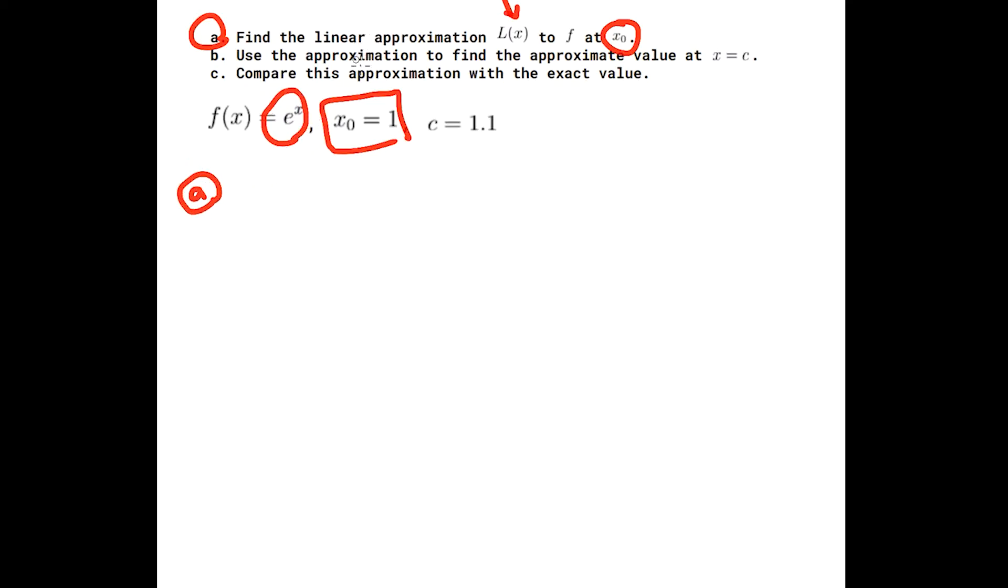To do this we need to figure out the equation of a tangent line at 1. So to do that I need to find the derivative first. Luckily the derivative of e^x is itself, so that makes it kind of easy. And we need to figure out that slope at 1, so I'm going to plug 1 in here and you end up with e.